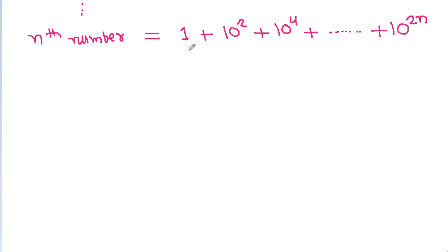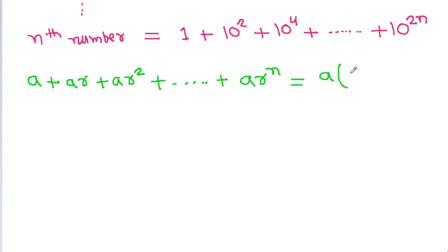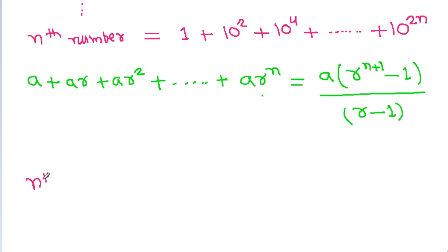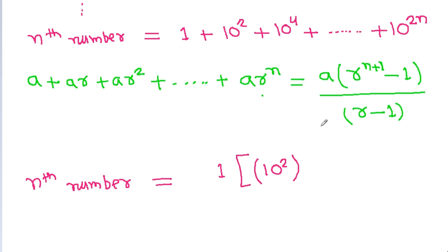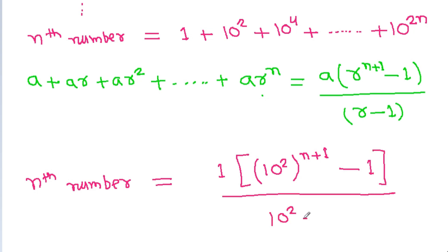The nth number is in GP, and we know the GP sum formula: a plus ar plus ar squared up to n terms equals a times (r to the power of number of terms minus 1) divided by (r minus 1). Here a is 1, r is 10 squared, and the number of terms is n plus 1. So the nth number equals (10 squared to the power n+1 minus 1) divided by (10 squared minus 1).